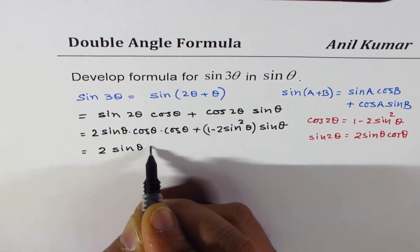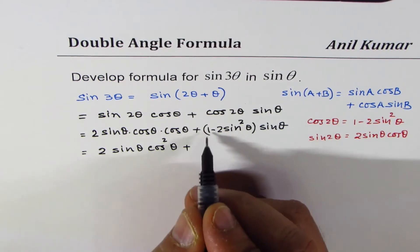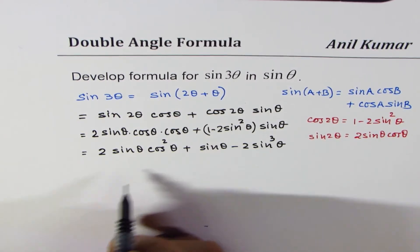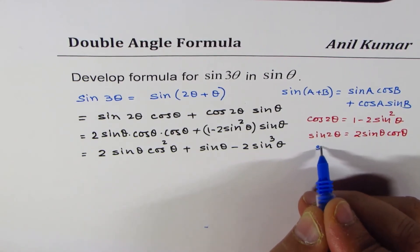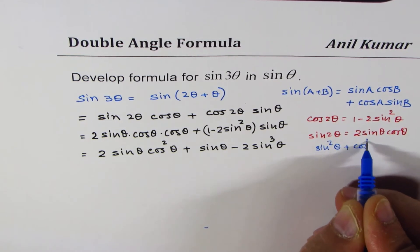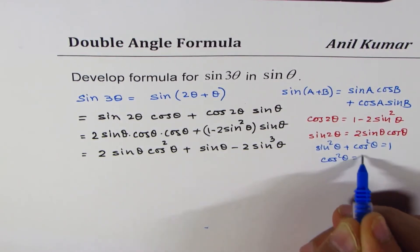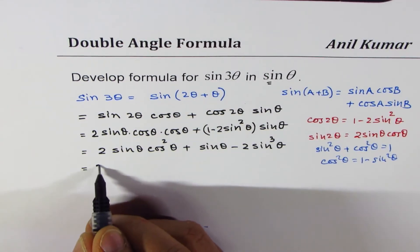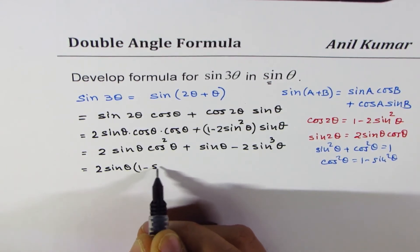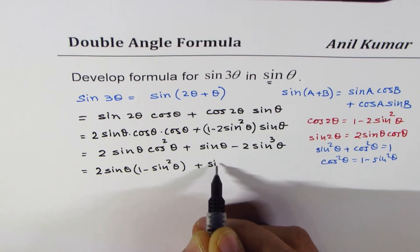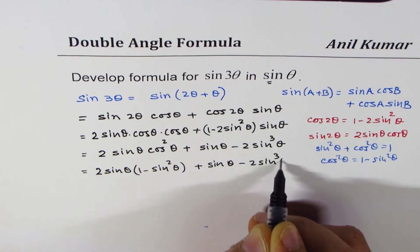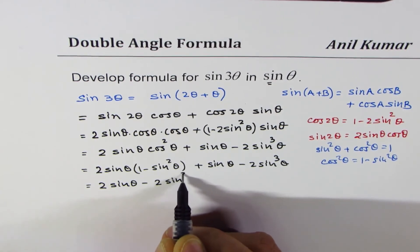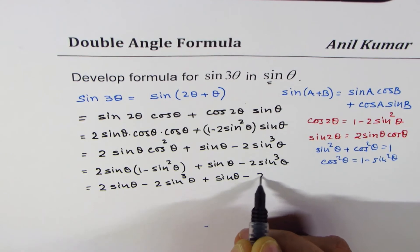We get 2 sin theta cos squared theta plus sin theta minus 2 sin cubed theta. We remember the Pythagorean identity: sin squared theta plus cos squared theta equals to 1, so cos squared theta equals 1 minus sin squared theta. Substituting, we get 2 sin theta times 1 minus sin squared theta plus sin theta minus 2 sin cubed theta. Expanding, we get 2 sin theta minus 2 sin cubed theta plus sin theta minus 2 sin cubed theta.